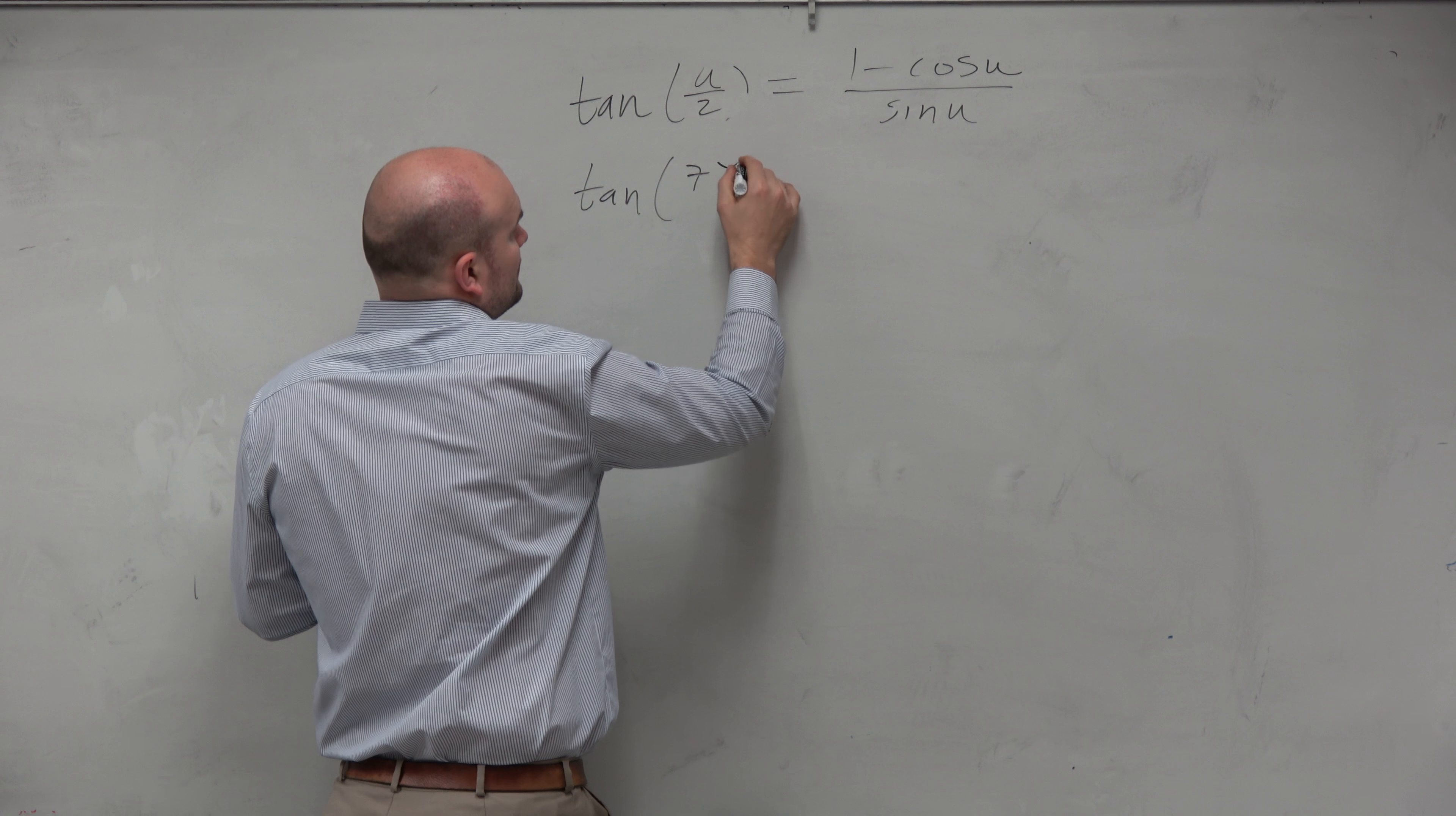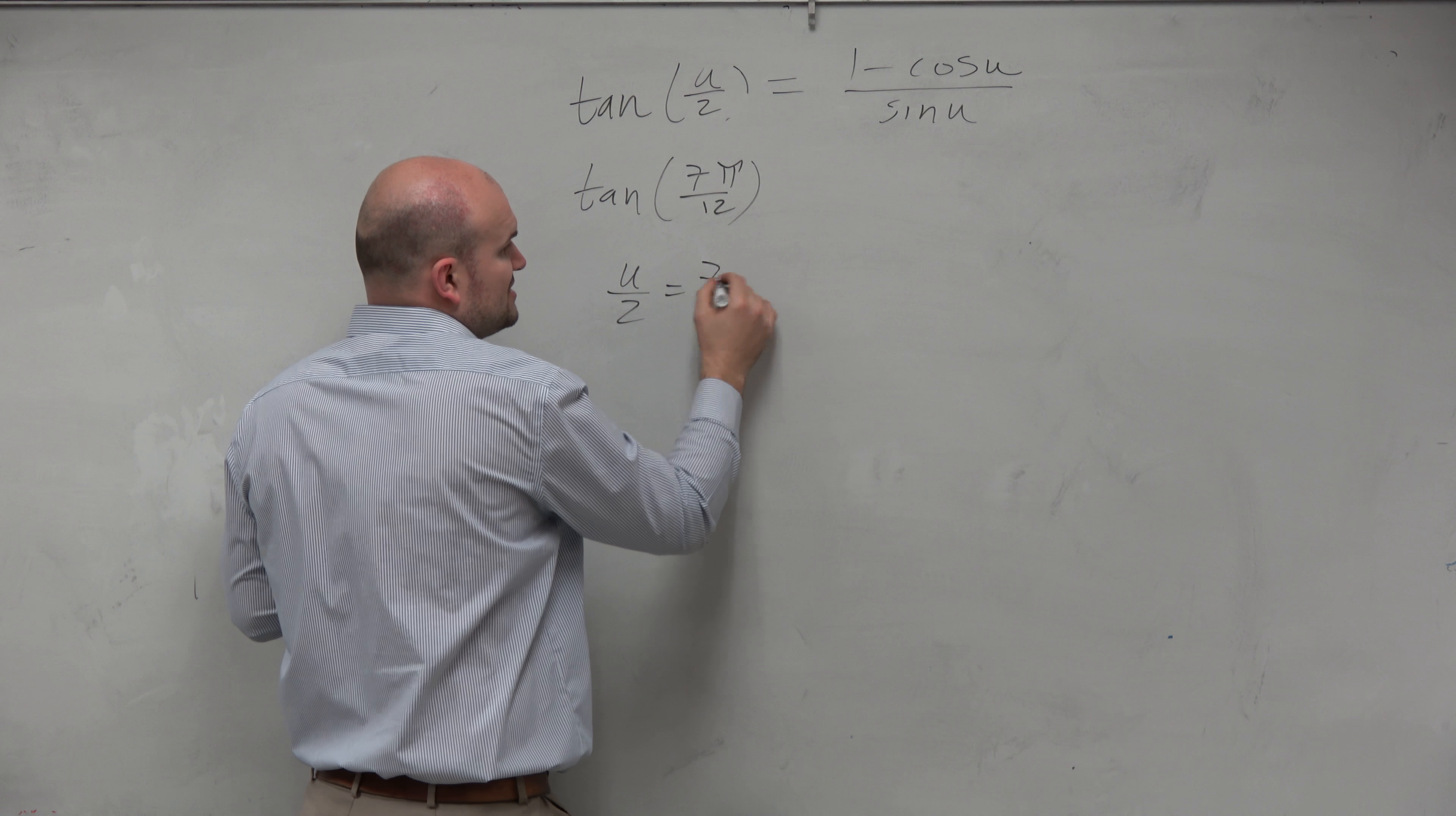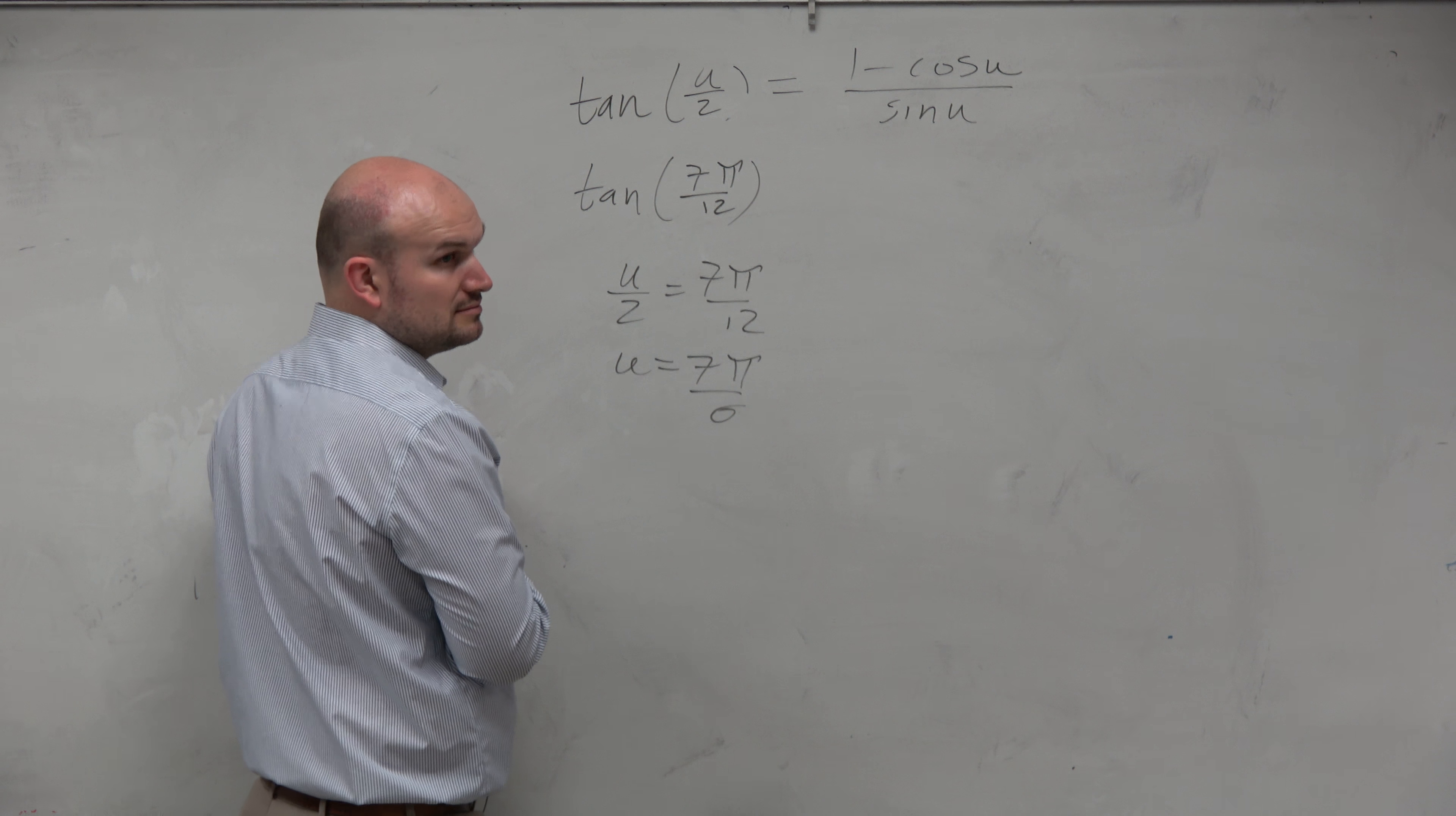So tangent of 7π/12, that's u over 2, right? So again, just take u/2 = 7π/12. Hopefully I don't need to show this step by step. You guys know that's 7π/6, right?